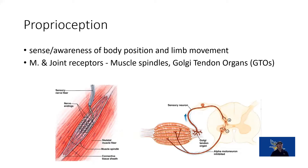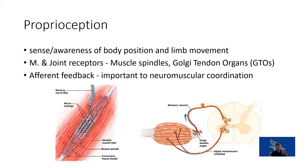Proprioception is our sense of awareness of our limbs and body position. We have mechanoreceptors within our muscles and receptors within our joints. The ones we focus on are muscle spindles, which sense stretch and rate of stretch and trigger reflexive muscle contraction when stretch is too great, and Golgi tendon organs, which sense tension within the tendon and cause reflexive relaxation when tension is too high. Both are reflexive safety measures to prevent muscle injury.